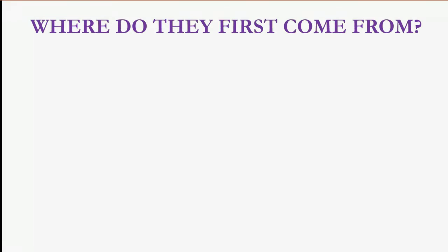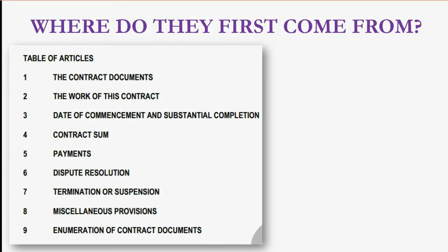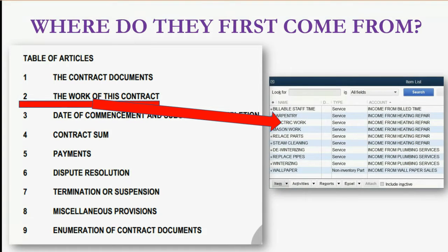Where do the items first come from? How do you decide what items to put on the estimate or invoice? Usually they come from a contract. A written contract with a contractor for work to be done over several months usually has several articles and many pages. The most important section for purposes of this video is the section called 'work of this contract.' That's really where you decide which items from your items list to put on the estimate and to put on the invoice and to bill in partial phases for progress invoicing.